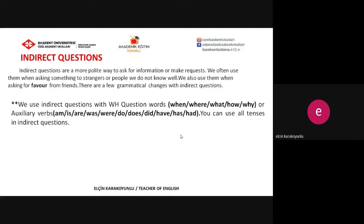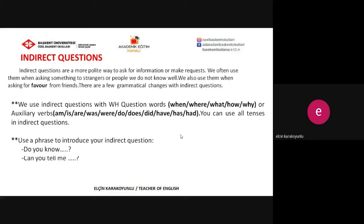We use indirect questions with WH question words like when, where, what, how, or why — or with auxiliary verbs for yes-or-no questions like am, is, are, was, were, do, does, did, have, has, or had. We also use a phrase to introduce indirect questions. For example: 'Do you know,' 'Can you tell me,' 'Could you tell me,' 'I'd like to know,' or 'I wonder.' These are some phrases we can use to introduce our indirect questions.